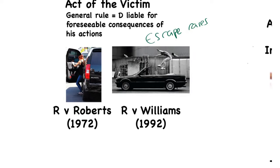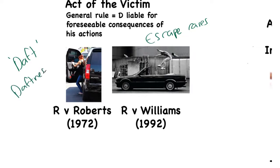In R v Roberts, the defendant interfered with the victim's clothes. The victim was a woman inside a car with the defendant; he interfered with her clothes, she felt she was going to be sexually assaulted and jumped out of a moving car, sustaining quite serious injuries. The defendant claimed that her jumping out of the car was an independent and intervening act. The court said the chain of causation will be broken only if the victim's actions were so daft as to be unforeseeable — the daftness test.